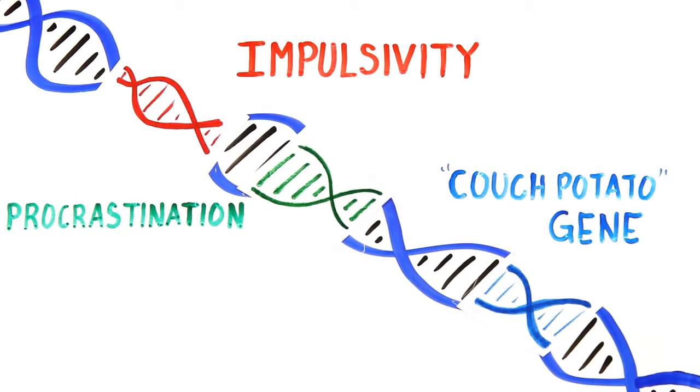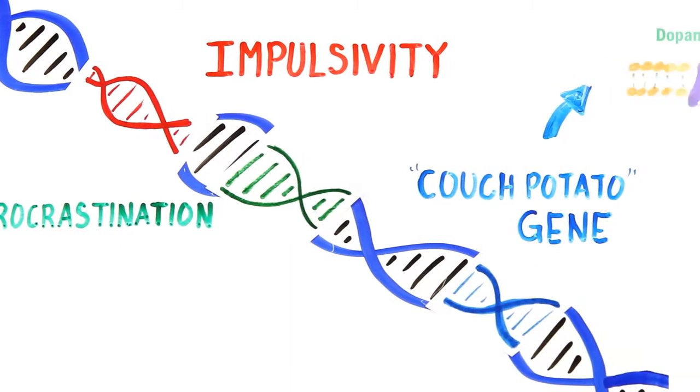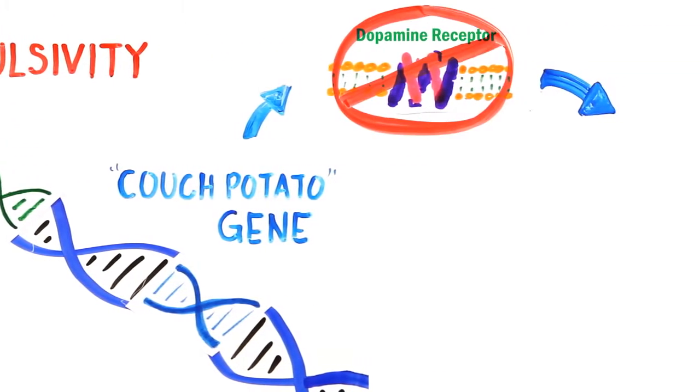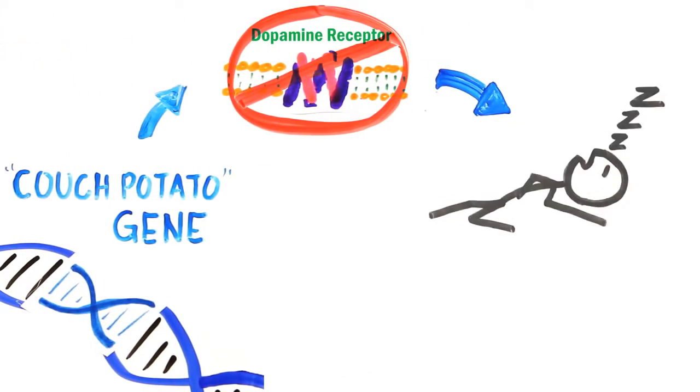Or rather, a mutation in a normal gene which regulates activity levels. This gene is responsible for a type of dopamine receptor. Without it, you're more likely to prefer sitting around and simply doing less than those who have the properly functioning gene.